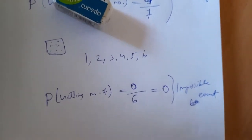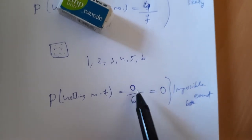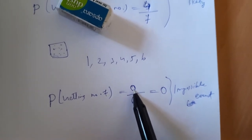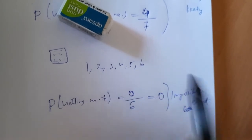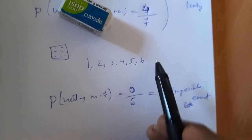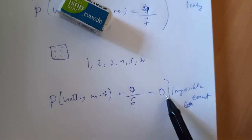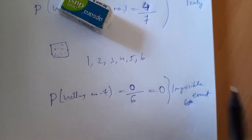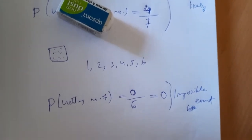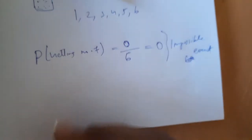The number of favorable cases is equal to zero. Zero divided by six equals zero. This is an impossible event — when the number of favorable cases is zero, the event is impossible.